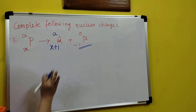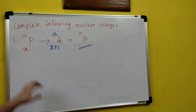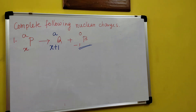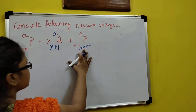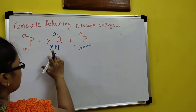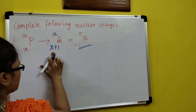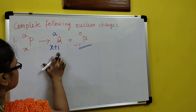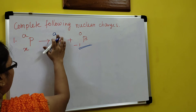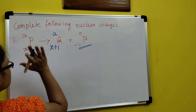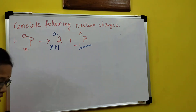So if in exam it is like that, you need to remember: when a beta particle is emitted, the atomic number increases by 1 (X plus 1) and there is no change in mass number.